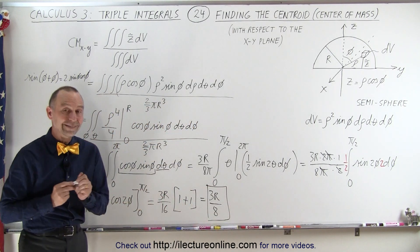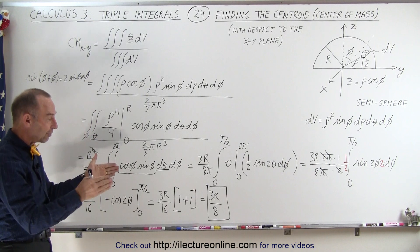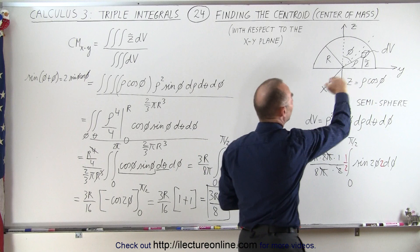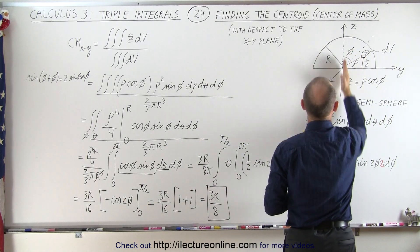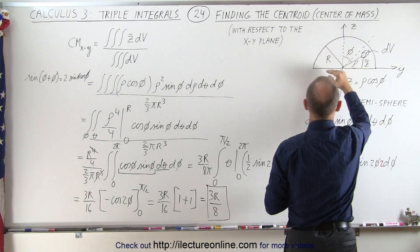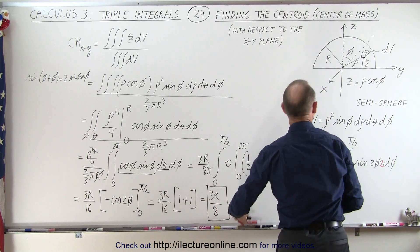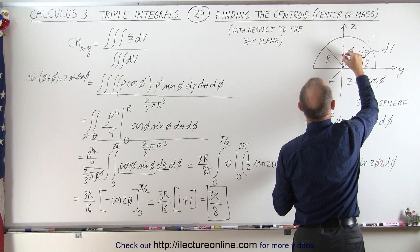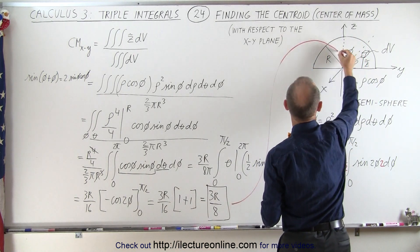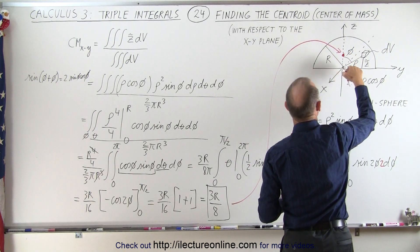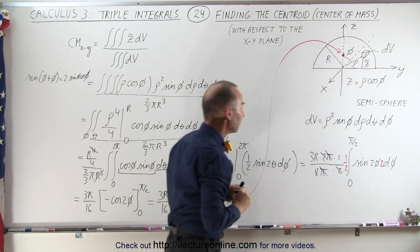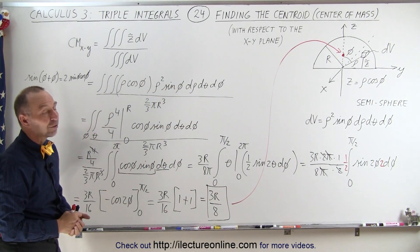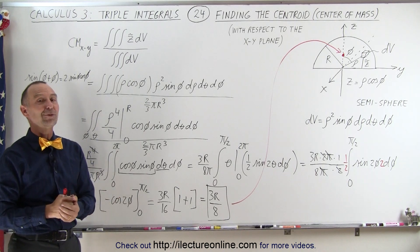This is the centroid of a semisphere relative to the plane of the base — in this case the xy plane. The distance of the center of mass along the z-axis from the xy plane is three-eighths the radius. Since this is the full radius and half the radius is the midpoint, three-eighths r is located about there — roughly three-eighths of the distance from the center to the top of the semisphere. And that is how we calculate the centroid of an object like a semisphere using triple integrals.